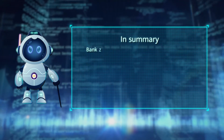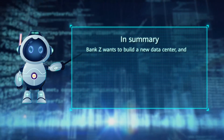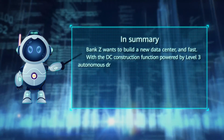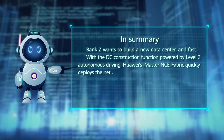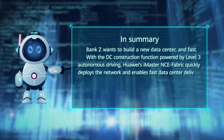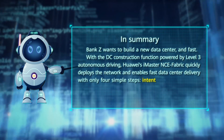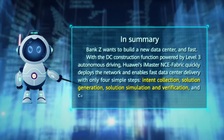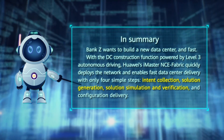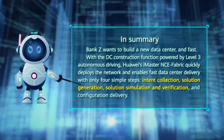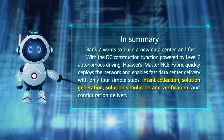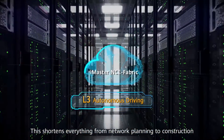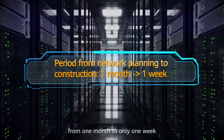In summary, Bank Z wants to build a new data center, and fast. With the DC construction function powered by Level 3 Autonomous Driving, Huawei's iMaster NCE Fabric quickly deploys the network and enables fast data center delivery with only four simple steps: intent collection, solution generation, solution simulation and verification, and configuration delivery. This shortens everything from network planning to construction, from one month to only one week.